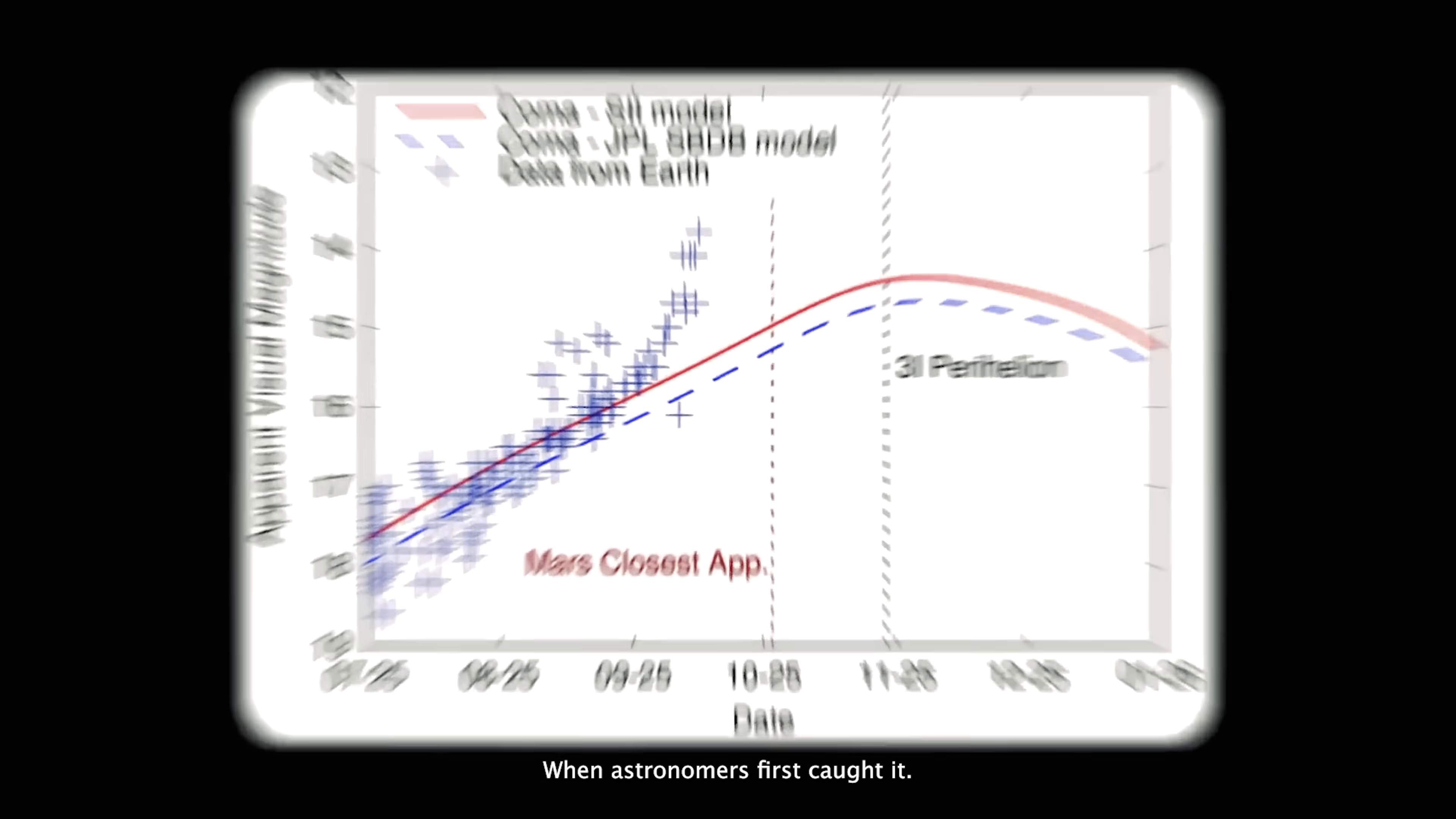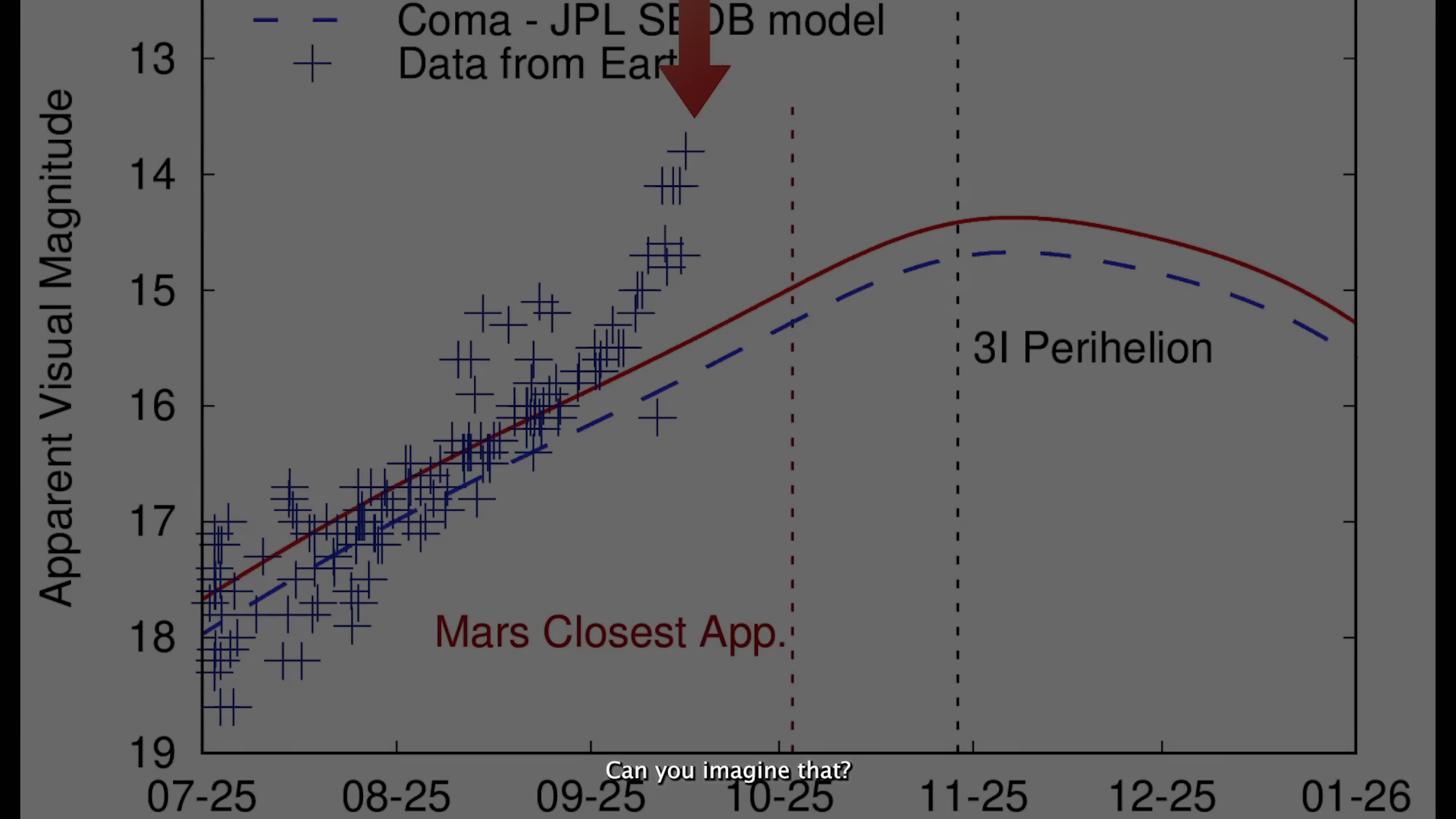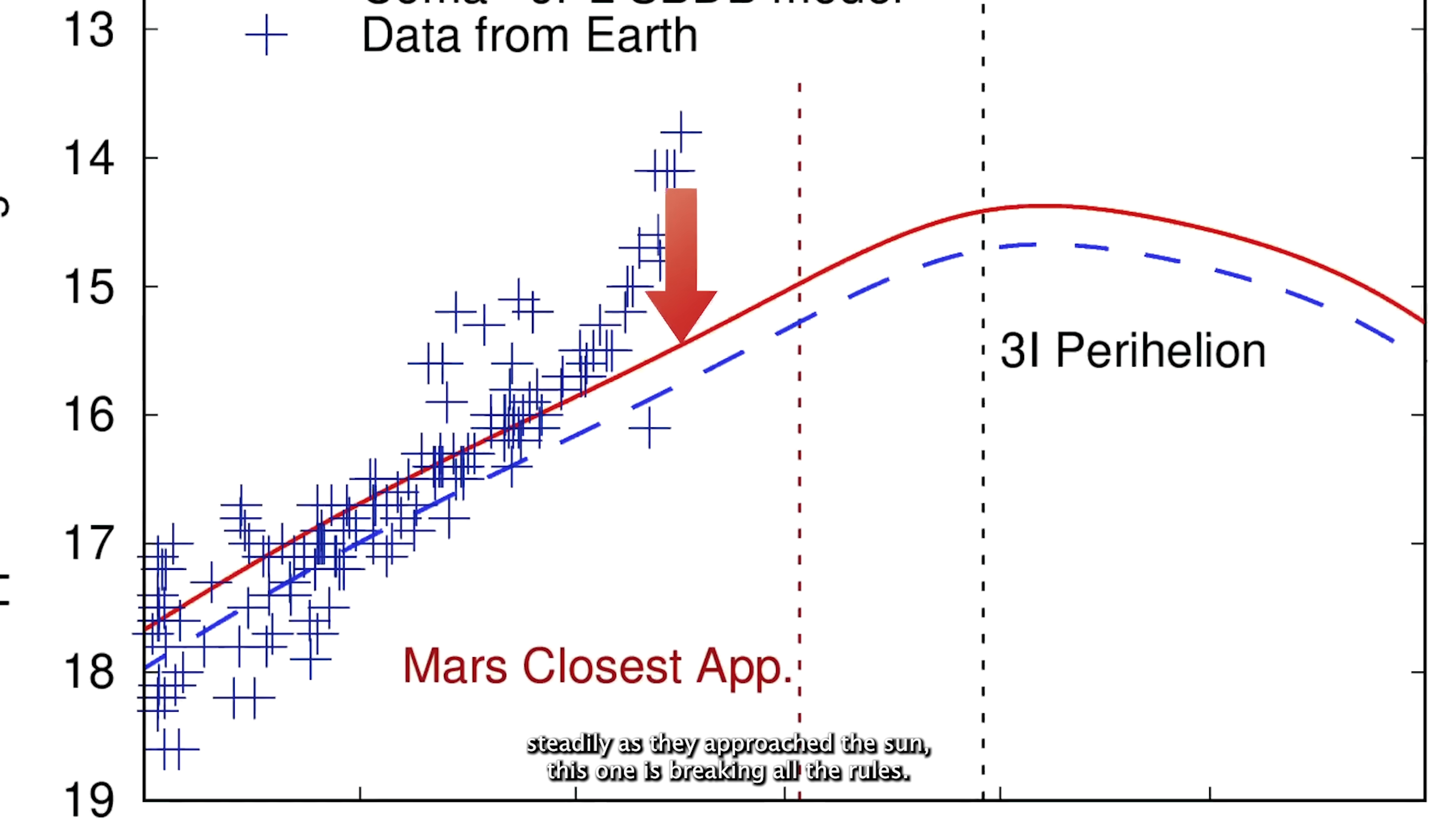When astronomers first caught it, 3i Atlas was an ultra-faint speck around magnitude 18. Now, it's blazing at about magnitude 12. Can you imagine that? A huge leap in cosmic terms, because in astronomy, the lower the magnitude, the brighter the object. While comets normally brighten steadily as they approach the sun, this one is breaking all the rules.